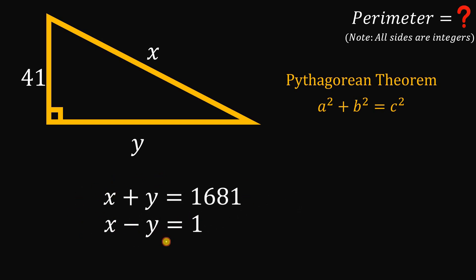Using these two equations, if we add them, we cancel out positive y and negative y, so this gives us 2x equals 1682. To solve for the value of x, divide both sides by 2, and we get 841. So the value of x equals 841.